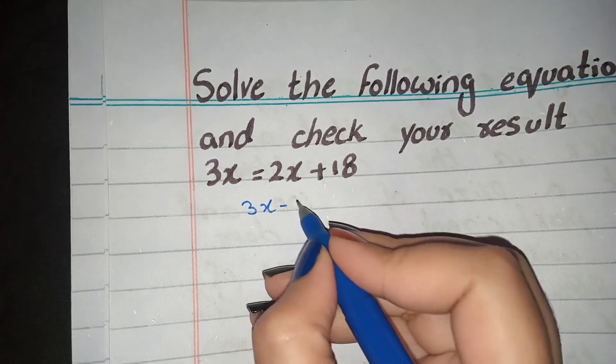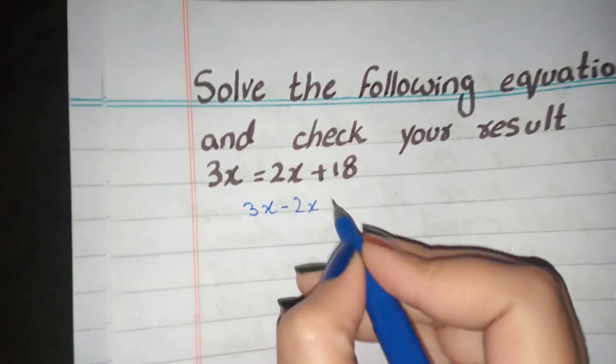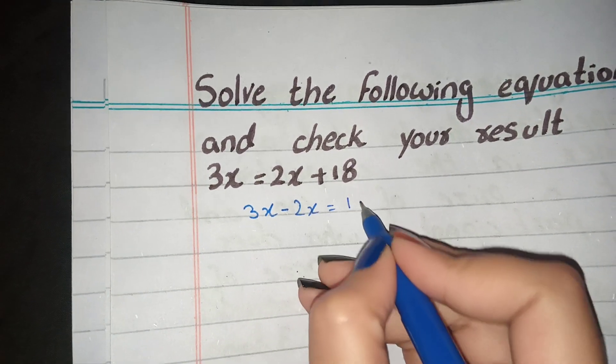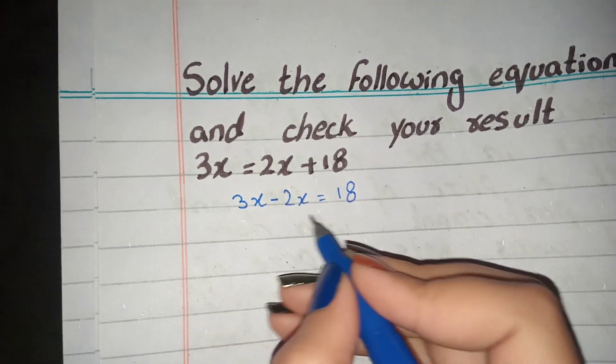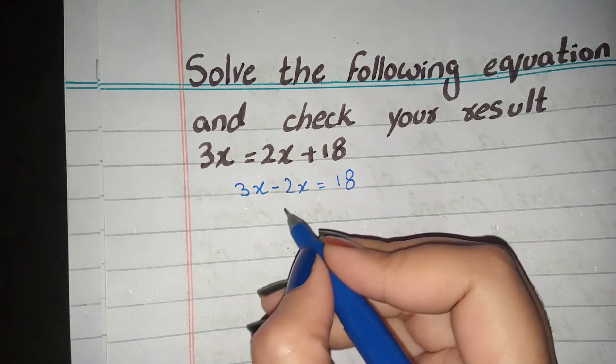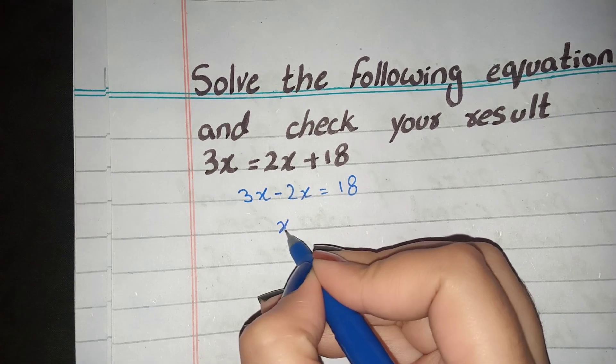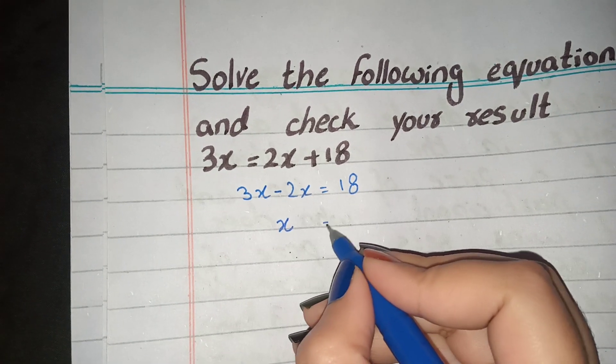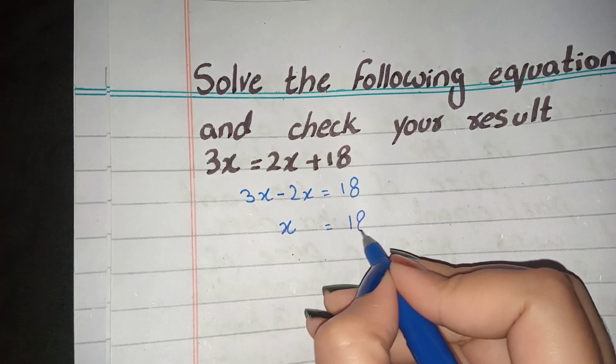It will be negative 2x. The 18 must always be on the right side. Then we solve so that we have only x on the left side. So we get x equals 18.